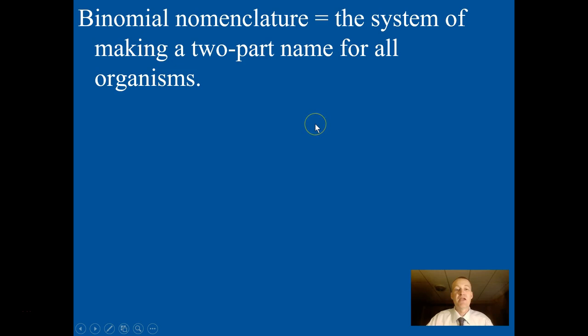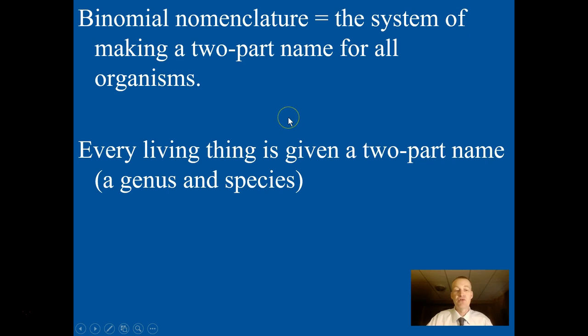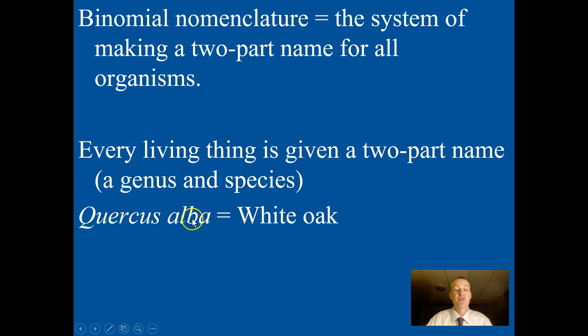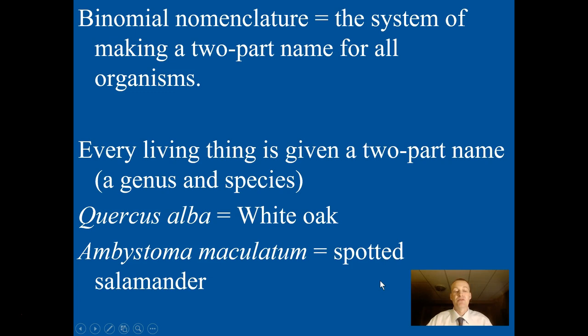Binomial nomenclature is the system of making a two-part name for all organisms on Earth. Every living thing is given a genus name and a species name. For example, Quercus alba means white oak — Quercus means oak and alba means white, so the first person to describe it said, 'The thing looks white and it's an oak, so I'll call it Quercus alba.' Ambystoma maculatum means spotted salamander. The first people to write these scientific names tried to describe something about the animal using Latin or Greek root words.